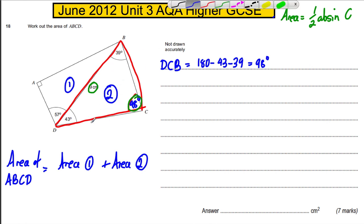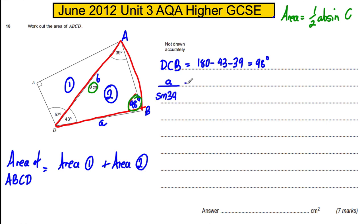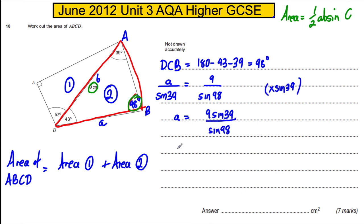So let's use the sine rule here. I want to work out this side — I'm going to call the side I want to work out little a, so the angle across from it is big A. I've got the side little b, so the angle across from it is big B. So I'm going to write down that a, which I don't know, over sine 39 must be equal to 9 over sine 98. Rearranging it, A is therefore 9 sine 39 — multiplying both sides by sine 39 — all over sine 98. Make sure you calculate this in degrees mode: 9 sine 39 over sine 98. When we do that, we get 5.7195.